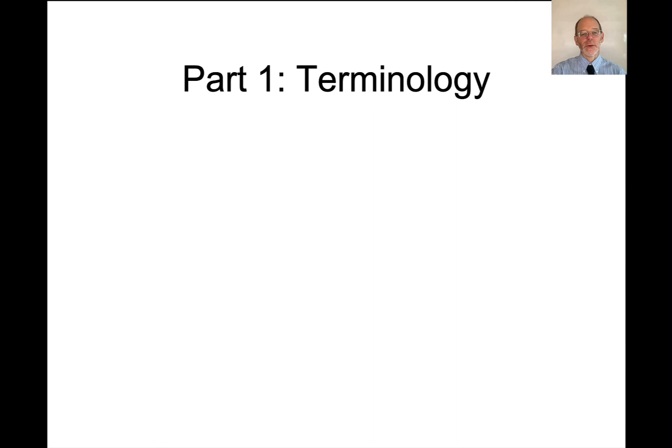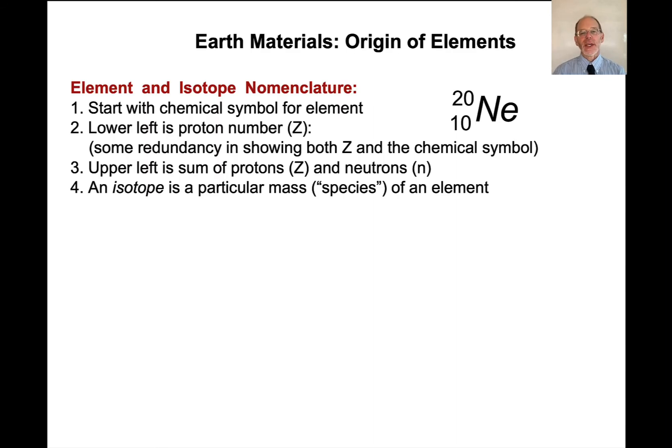So first let's deal with some terminology. So let's start with the chemical element symbol for an element. This is the element neon, so that's the chemical symbol for that element. In this notation, the lower left number here is the proton number, which we refer to as Z. Now there's some redundancy in saying neon and 10, because neon is atomic number 10. So if you look this up on a periodic table, you would see that it must have 10 protons. But this is to remind us that there are 10 protons in neon, so that we don't have to go to a periodic table to look at this.